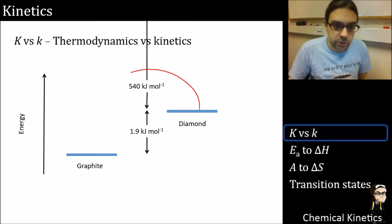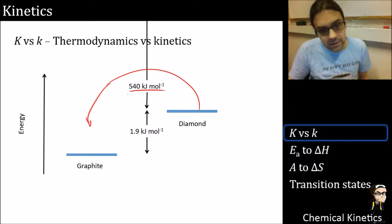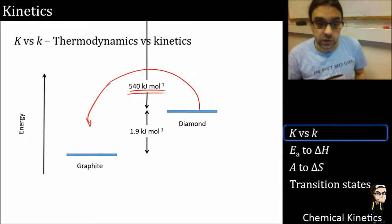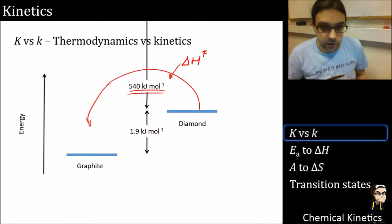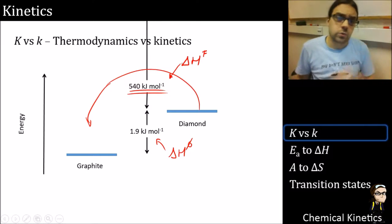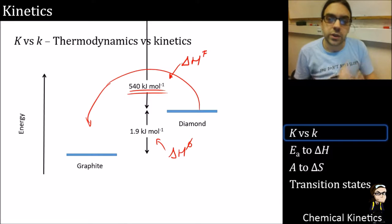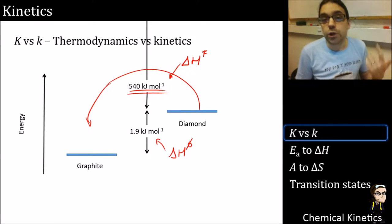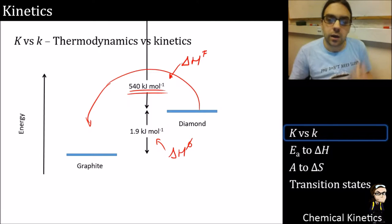This is why we deal with kinetics. The activation energy to go from diamond to graphite, or vice versa, is somewhere in the region of 540 kilojoules per mole - that's the activation enthalpy. As a result, one might be thermodynamically stable but can't transfer there because the kinetic energy value is way too high.